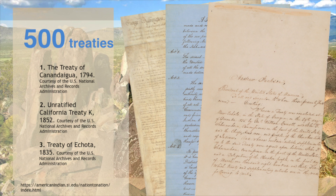Through the treaties, many tribes gave up certain lands and rights to the U.S. government in exchange for various federal commitments that included provisions for the future of their people. In the treaties, tribes' rights were often reserved for their new communities, lands, and livelihoods, including tracts of land which were called reservations.